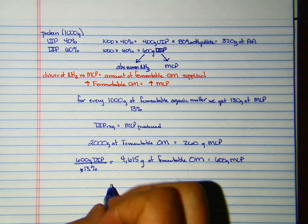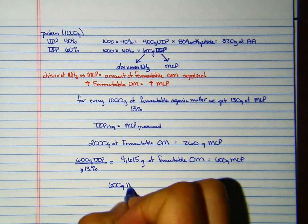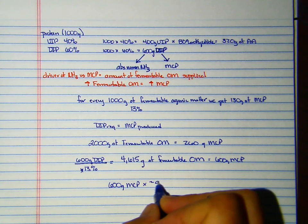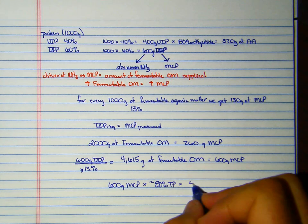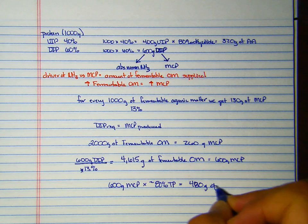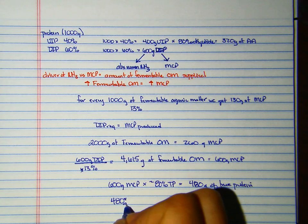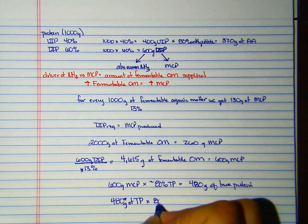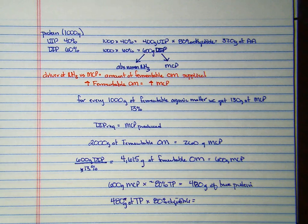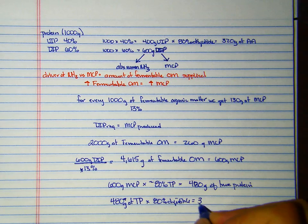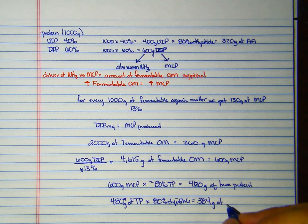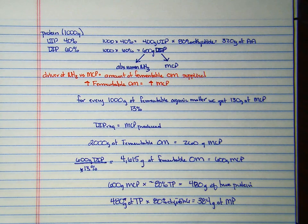We said MCP is—so 600 grams MCP times approximately 80% true protein means I have 480 grams of true protein. And then we said that was 80% digestible, so 480 grams of true protein times 80% digestible equals 384 grams of MP. So MP was metabolizable protein—that would be the grams of amino acids, dipeptides, and tripeptides absorbed.